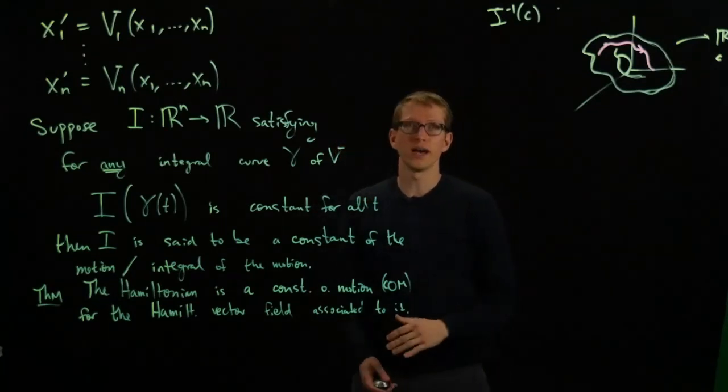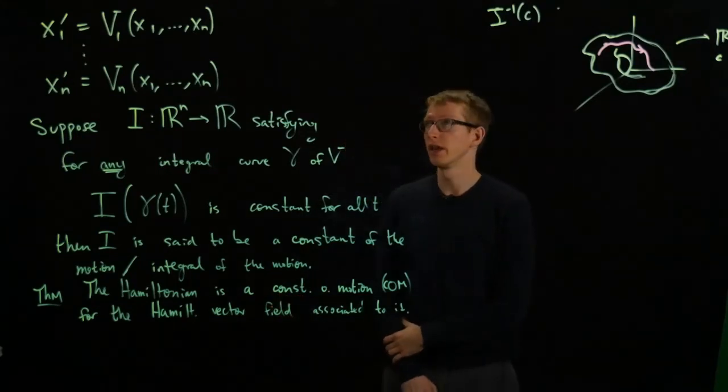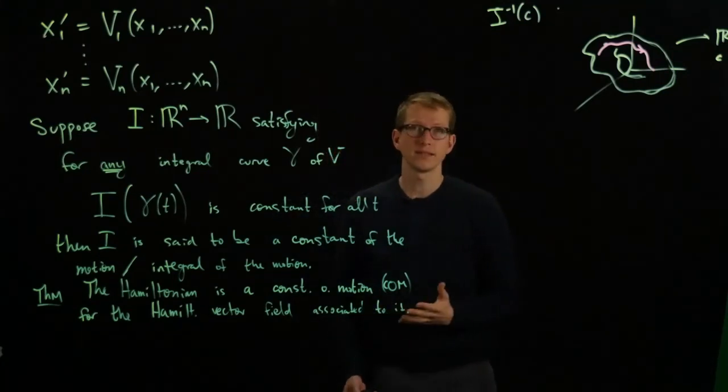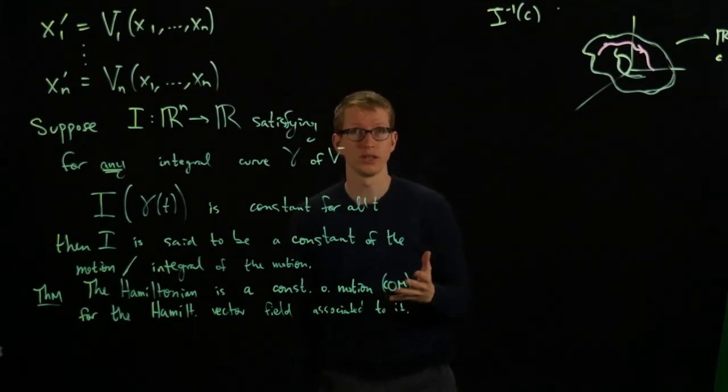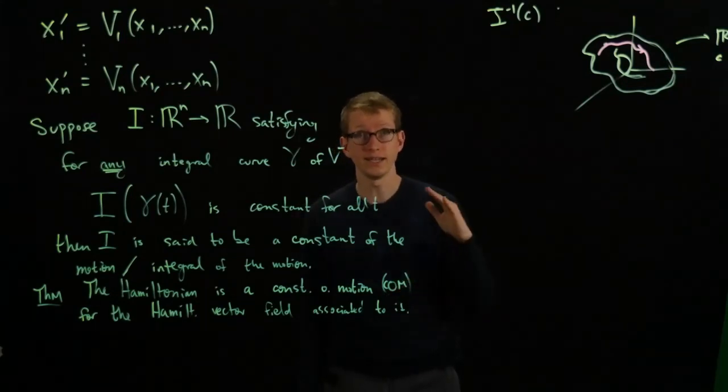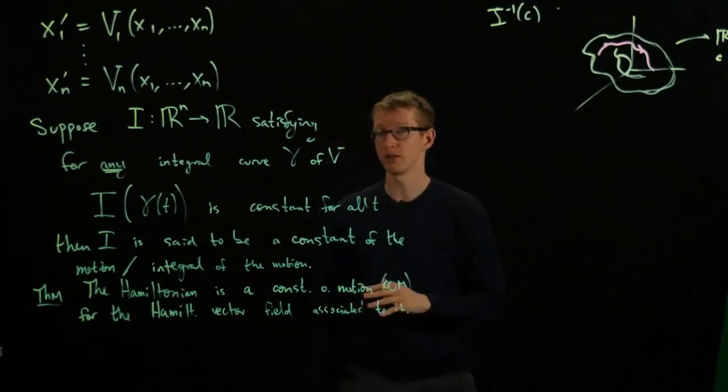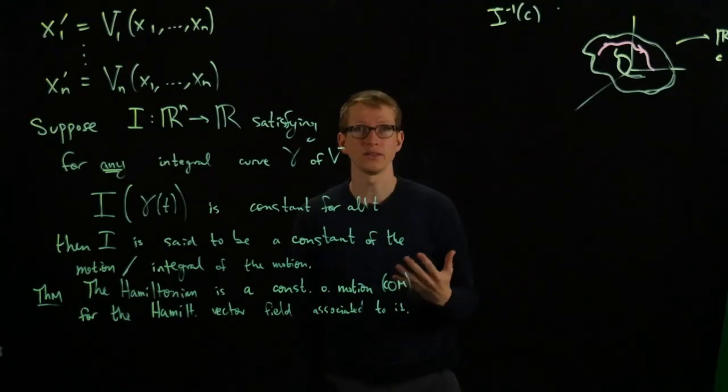Now imagine that you have a huge system, Avogadro number of particles, and you want to solve a system of differential equations, it might seem impossible. The best thing that you can often hope for is finding such constants of the motion. And it's very rare to find enough so that you lower the dimensions very severely so that you can solve it explicitly, but these give you an idea of how the system evolves.